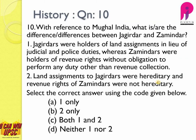Question number ten: with reference to Mughal India, what are the differences between Jagirdars and Zamindars? Jagirdars were holders of land assignments in lieu of judicial and police duties, whereas Zamindars were holders of revenue rights. The option stating Jagirdars held land only is wrong. Land assignments to Jagirdars were non-hereditary, and the option claiming revenue rights of Zamindars were not hereditary is also wrong — they were hereditary. The answer is D — neither one nor two.